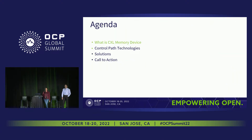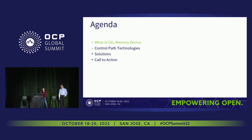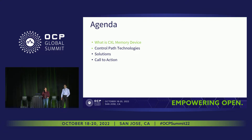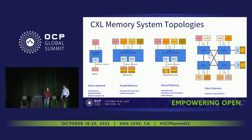For Meta to deploy CXL memory devices at Meta scale, we not only need to meet the performance requirement, the TCO requirement, and the power budget. We also need to make sure it can seamlessly integrate into our data center. A new skill is introduced and the topology gets a little more complex, but we need to make the management as simple as possible. That is mostly what we are talking about in today's presentation, and we hope to collaborate with you.